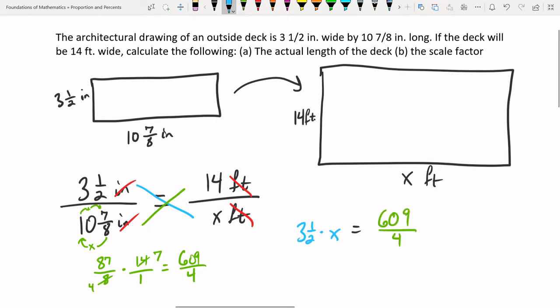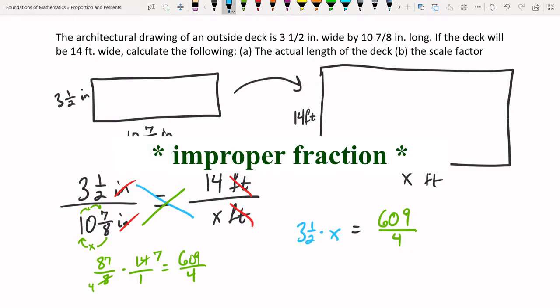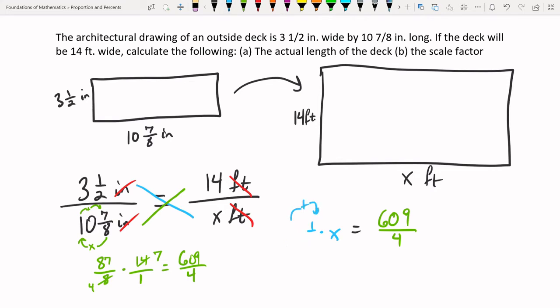And multiplying straight across, that gives us 87 times 7 is 609 and 4 in the denominator. So we get 609 over 4. I'm going to change the 3 and a half into a mixed number. I do that quite easily by taking 2 times 3 is 6 and 6 plus 1 is 7. So we have 7 over 2. And now all I have to do is divide by the thing in front of the X. We have a fraction with a division sign and another fraction. Instead, we multiply by the reciprocal.